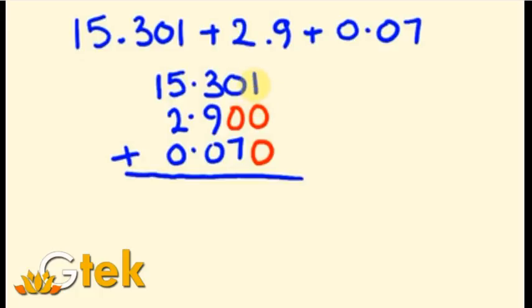Now, while adding: 1 plus 0 plus 0 is 1. 0 plus 0 plus 7 is 7. 3 plus 9 plus 0 is 12. So the carry 1 should be mentioned in the number above 5. That is 1 plus 5 plus 2 equals 8, and the remaining 1.